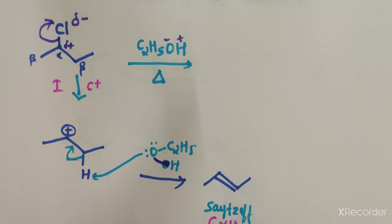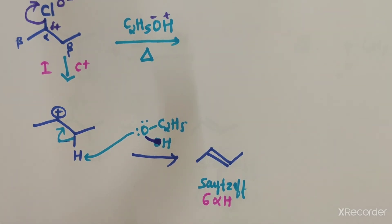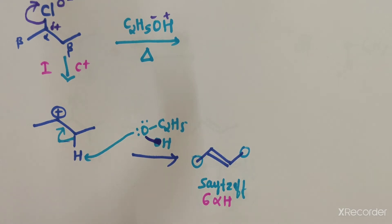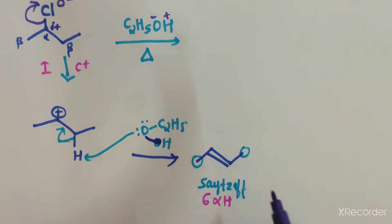This product is called the Zaitsev product. We have discussed Zaitsev and Hofmann elimination reactions in a previous video. To determine the major product, we count how many beta hydrogens are present — here there are three hydrogens on one side and three on the other, giving six total beta hydrogens. The Zaitsev product is the major product.